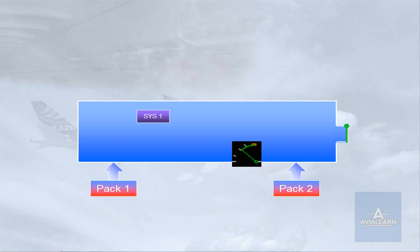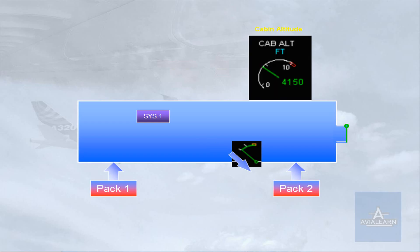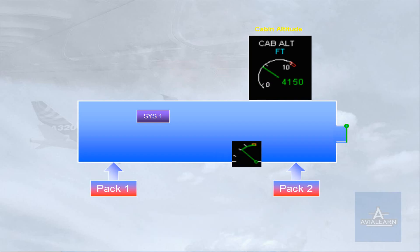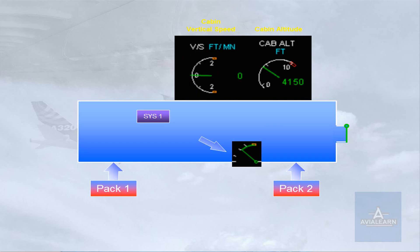Now let us look at what happens to cabin altitude. If the outflow valve is closed or only allowing a small amount of air to escape, then the cabin altitude will descend. We can also see what the cabin is doing by reference to vertical speed. When the outflow valve closes, the cabin altitude will decrease — negative vertical speed.